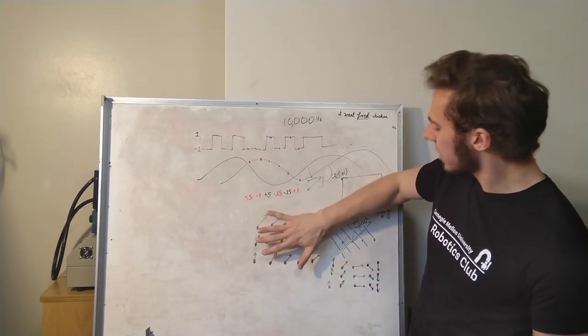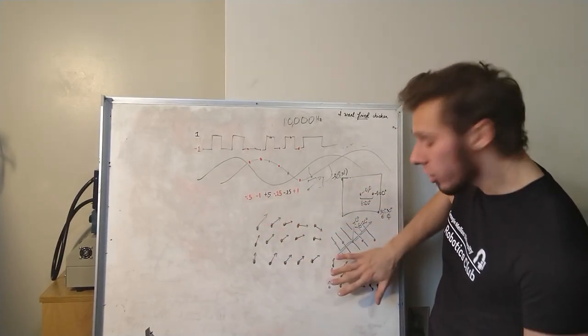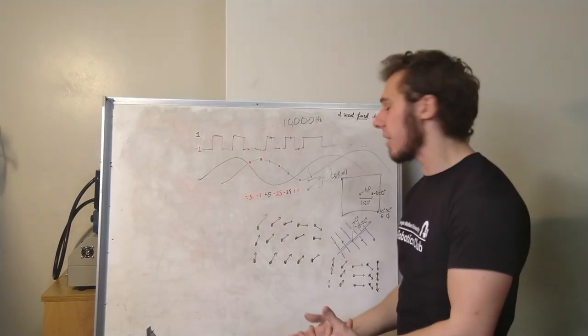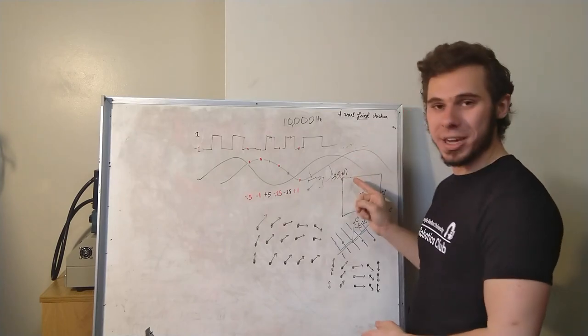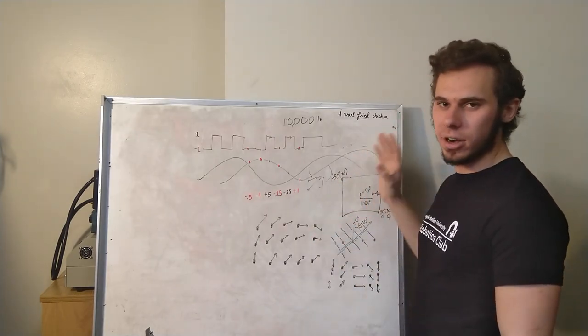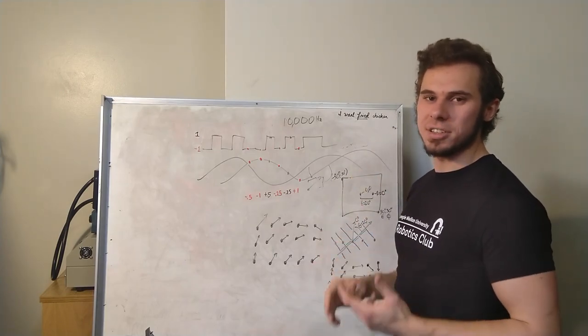We sum those up, we take the magnitude of that vector, and that is the value for that pixel in the image. We repeat this for every pixel in our image, and that gives us our final image.